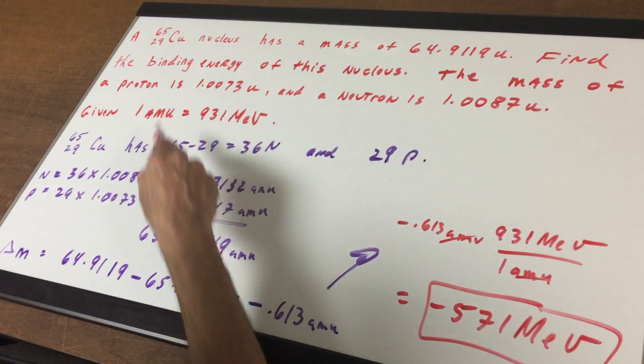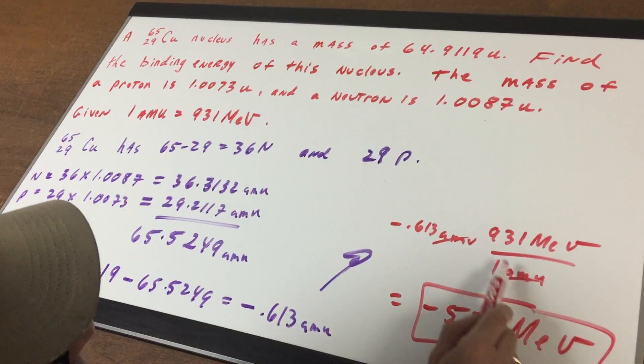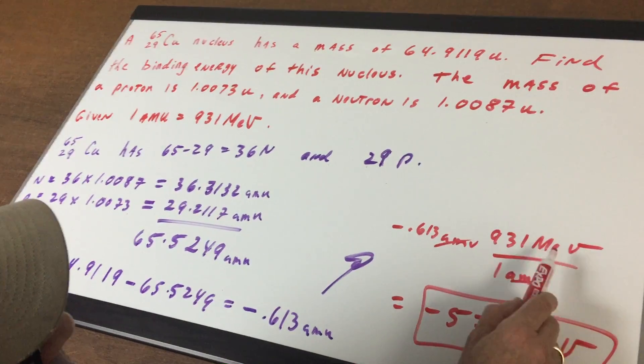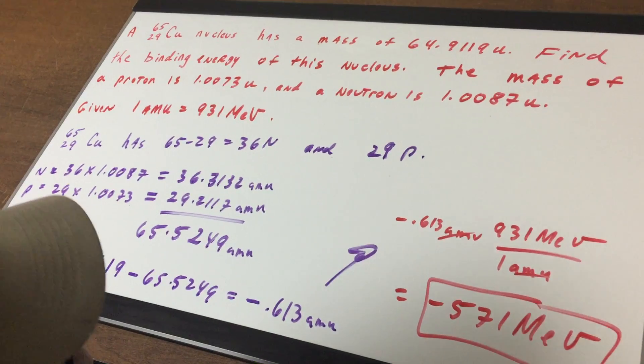Now use the conversion. We know that one AMU is 931 mega electron volts. Convert it and solve.